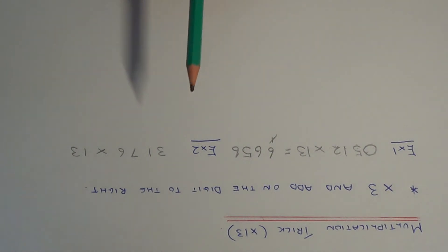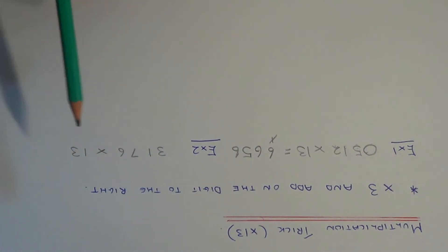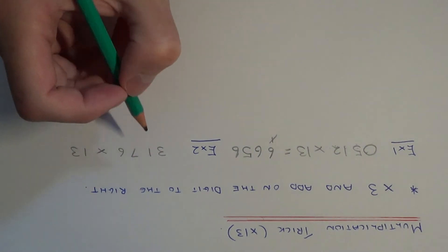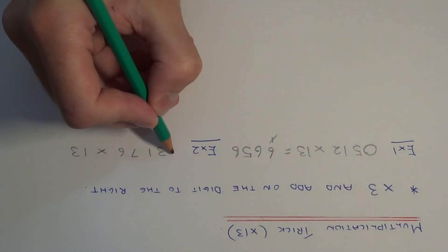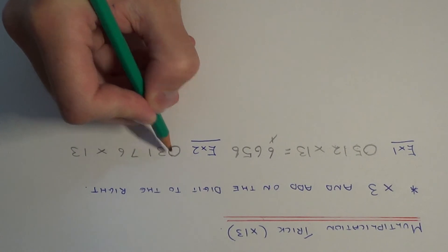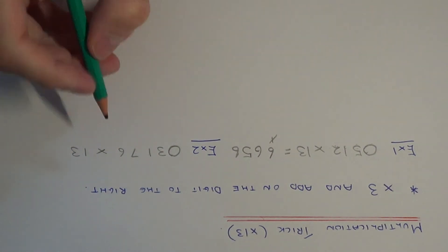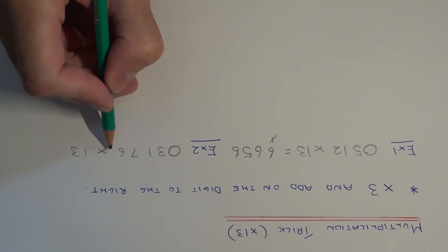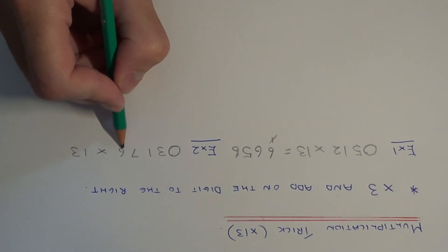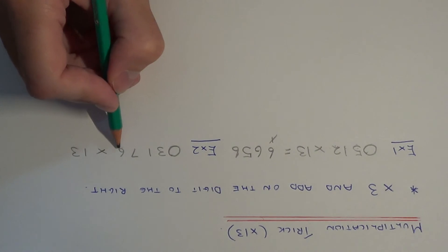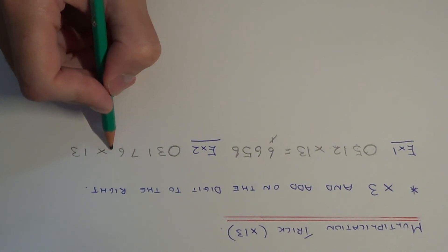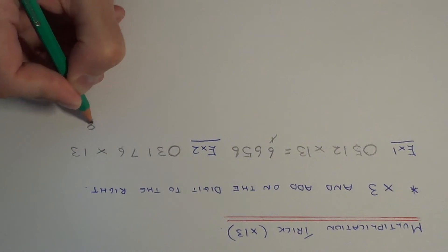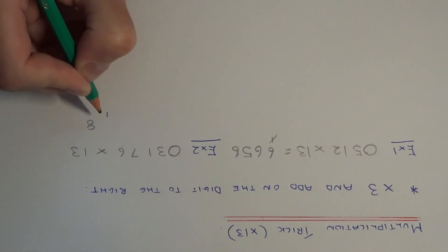So let's move on to example 2: 3,176 multiplied by 13. We put a 0 before the number we're multiplying by 13. Starting at the end, multiply the digit by 3 and add on the digit to the right: 6 times 3 is 18, and there's nothing to the right, so our first part of our answer is 18. Put the 8 at the end, carry the 1 underneath.